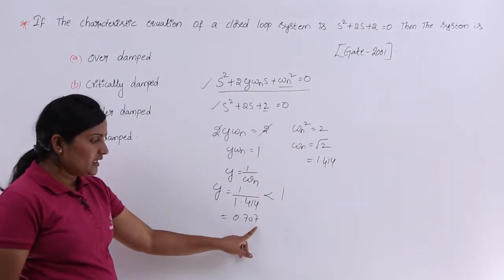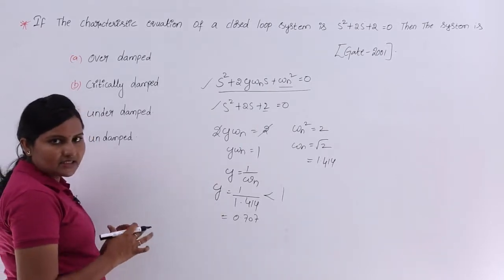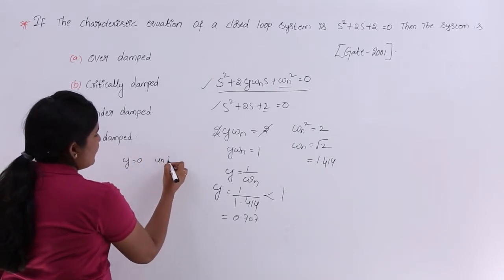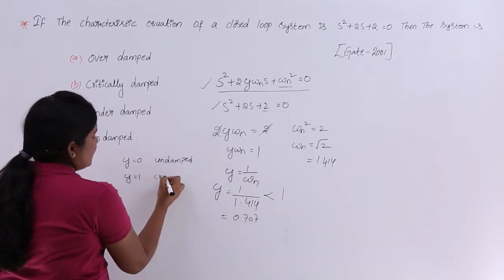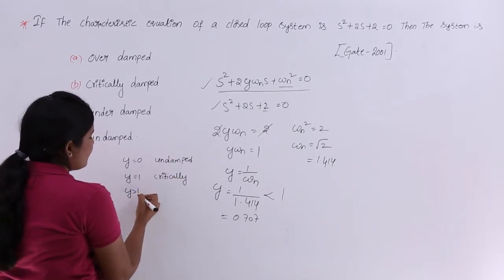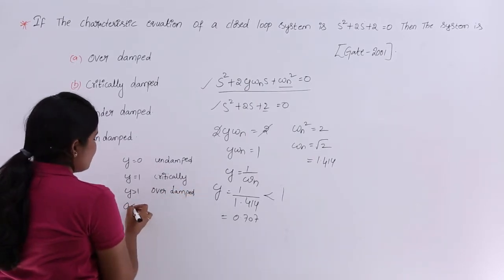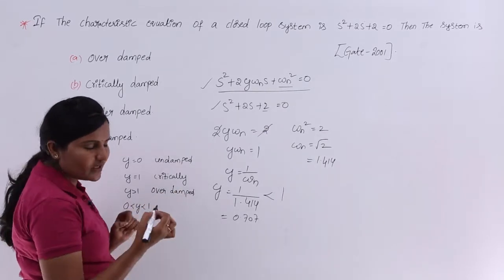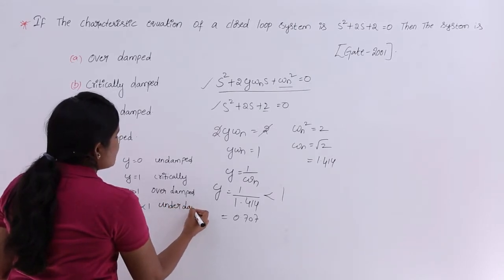0.707 is in between 0 and 1. Always remember the damping classification: if ζ = 0, that is an undamped system; if ζ = 1, that is a critically damped system; if ζ > 1, that is an over-damped system; if 0 < ζ < 1, then it is an under-damped system.